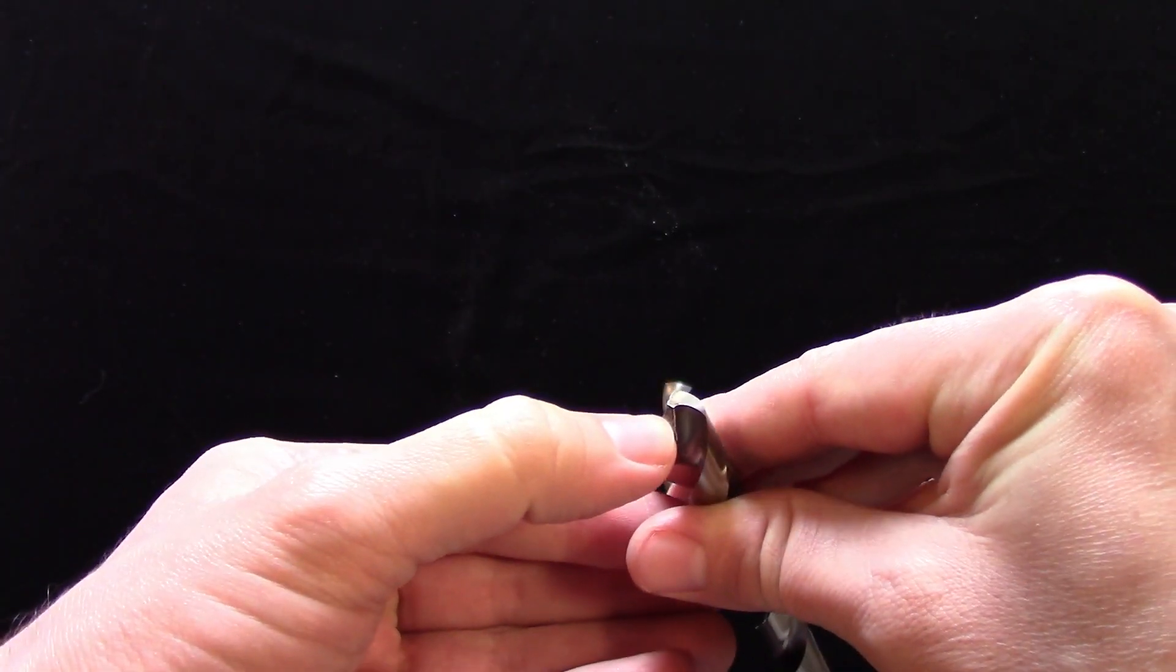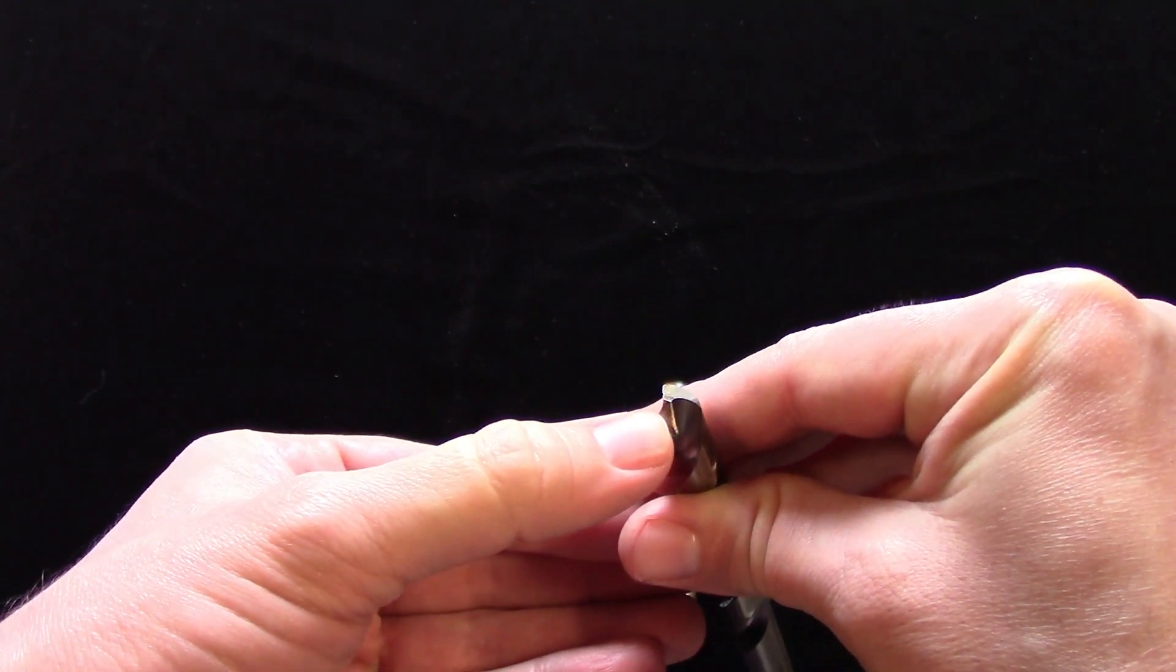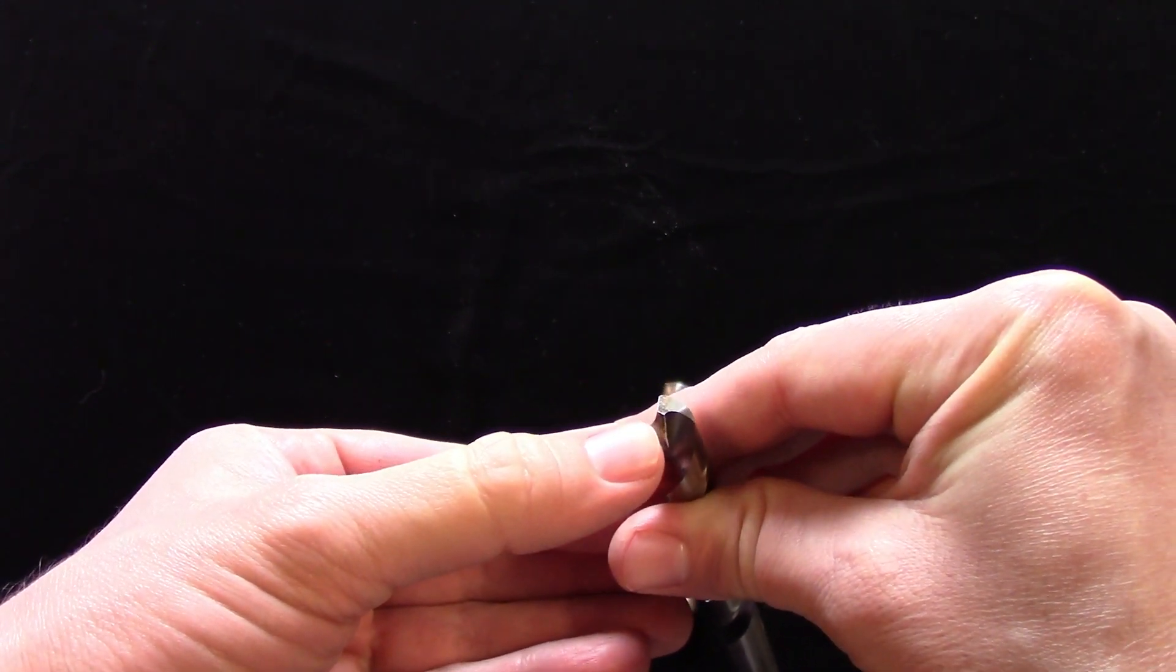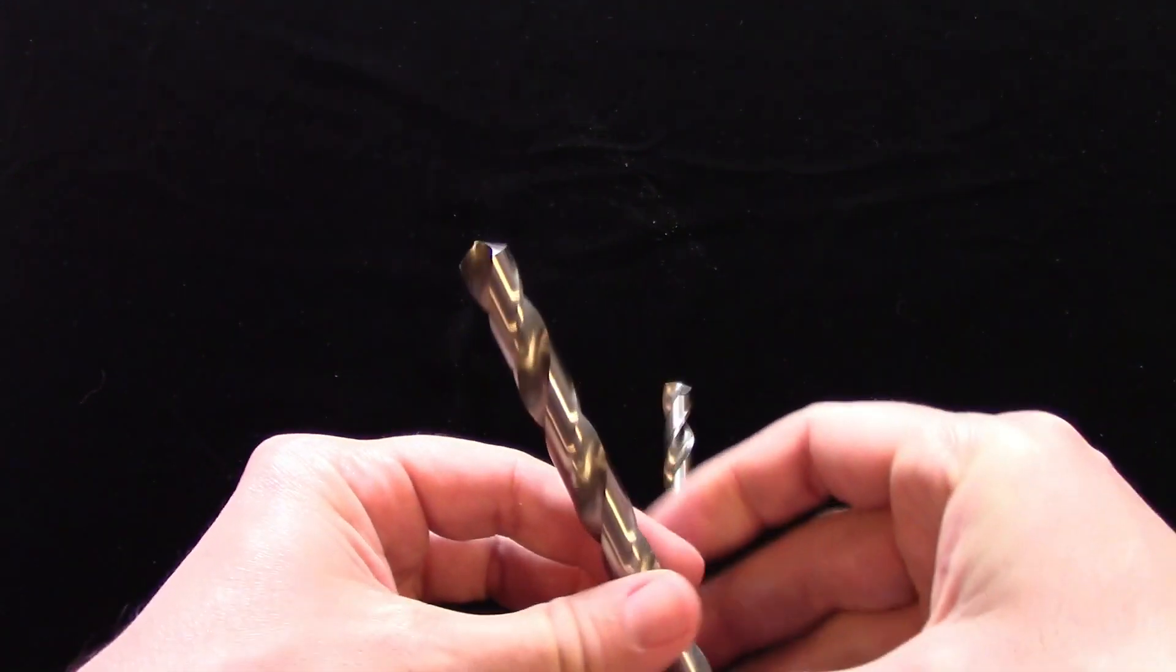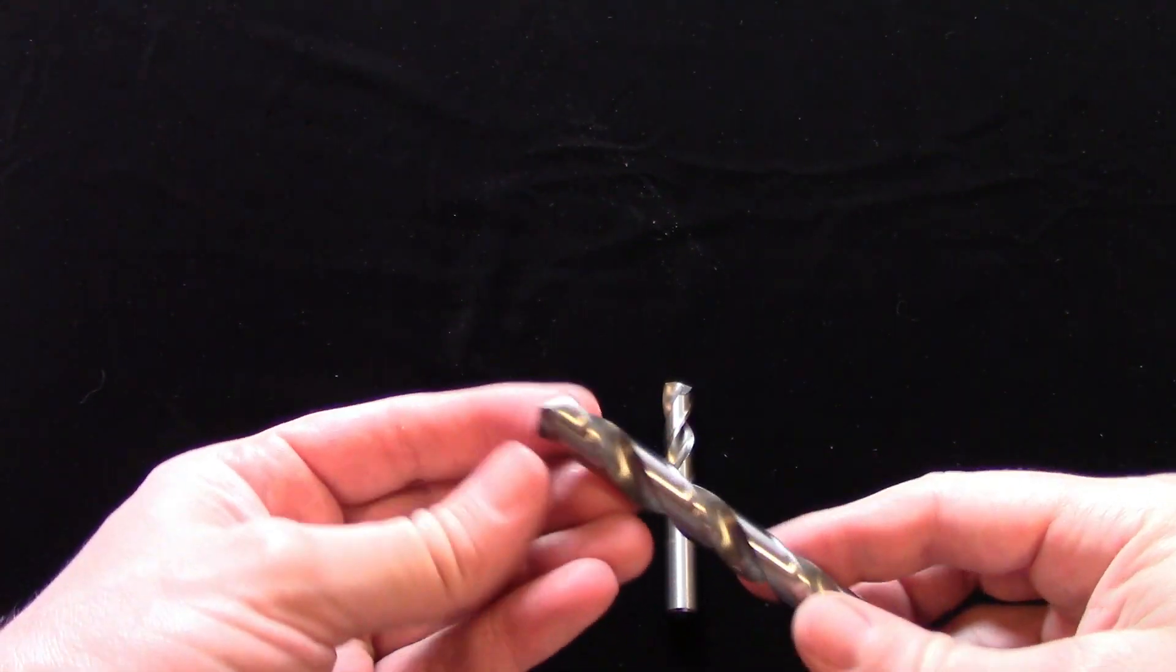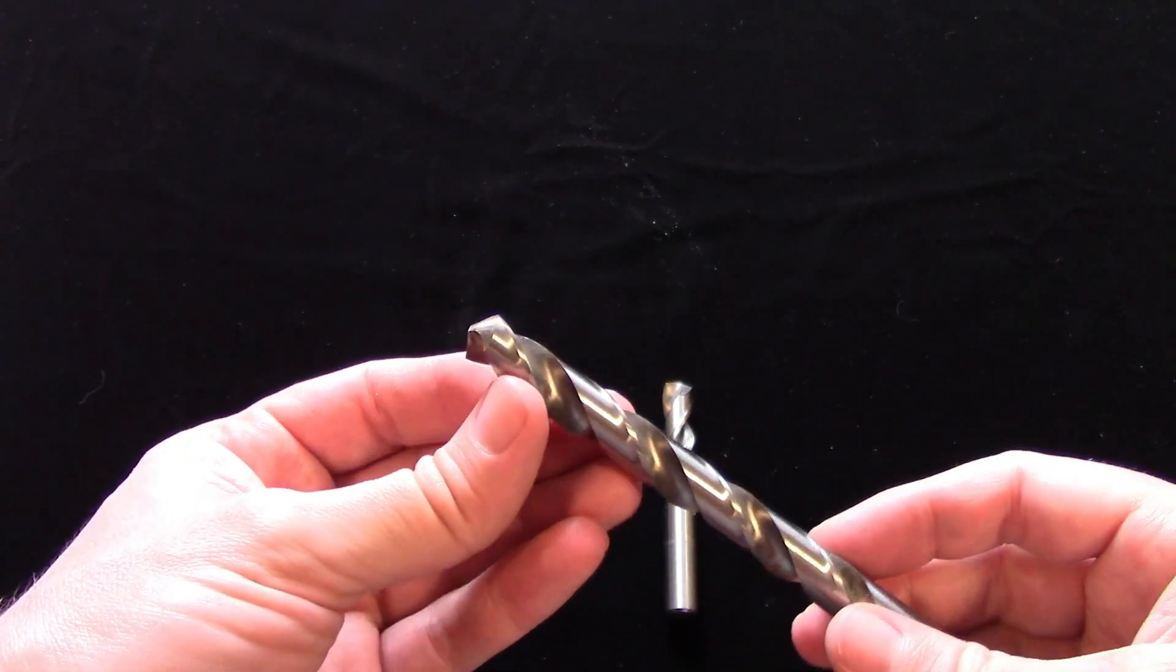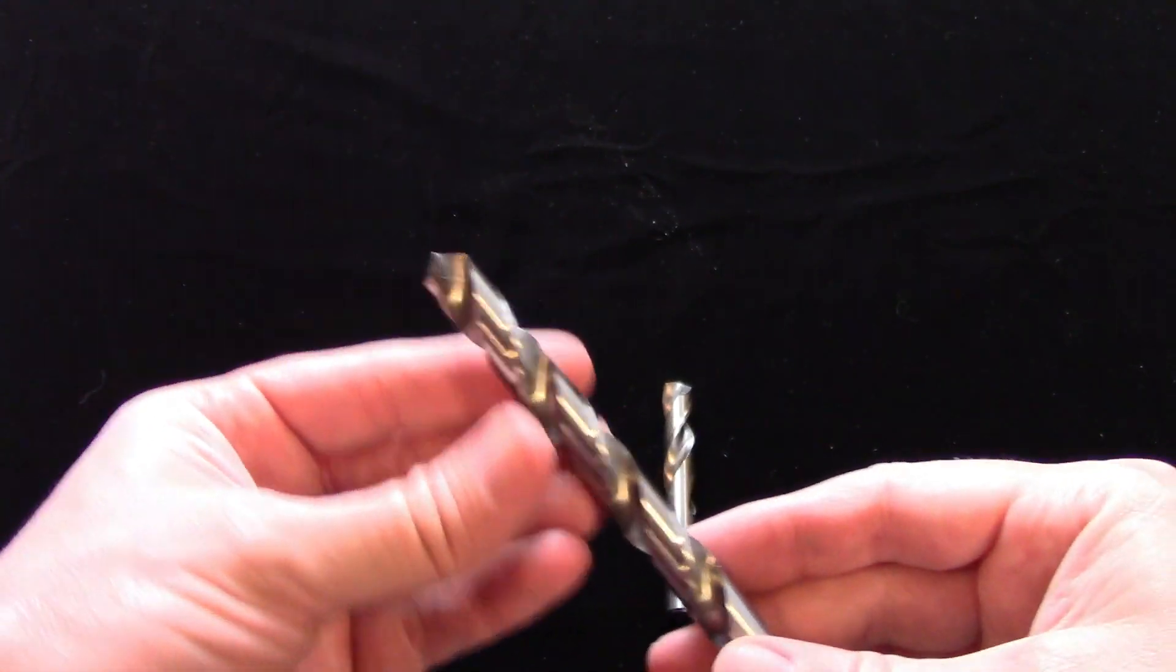The chisel point on the 118 degree tip is responsible for most of the walking problems encountered with drilling, especially when using a hand drill. Because of this, it is recommended that you always spot drill first when using these.